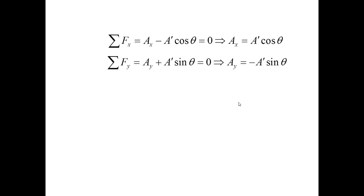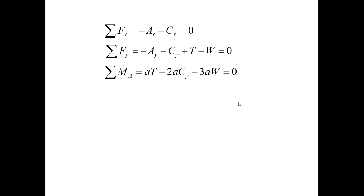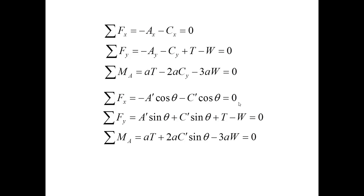So, we will combine the first two. It allows us to express AX and AY in terms of A'. Then, for the second glider, we will express CX and CY in terms of C'. Now, we can take the equation for the bar and replace AX, CX, AY, CY with the expressions in terms of A' and C'. If we look at the last three equations, we see that we have three equations for three unknowns: A', C', and T.